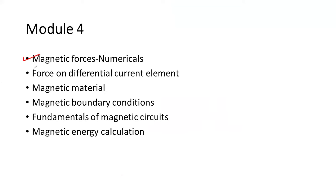Magnetic forces, especially you have to follow the numerical examples. Force on differential current element, then magnetic materials. In that, you need to study about paramagnetic material, diamagnetic material, and ferromagnetic material. Sometimes in university questions, you may get questions like what are the differences between paramagnetic, ferromagnetic, and diamagnetic materials. Then magnetic boundary conditions. There are mathematical equations, fundamentals of magnetic circuits, ultimately magnetic theory, energy calculations. How to calculate the magnetic energy. These are the important topics you need to cover at least from Module 4 before going to the examination.